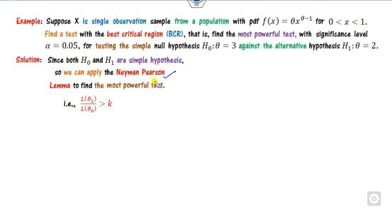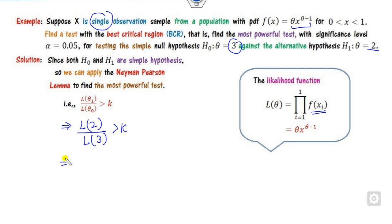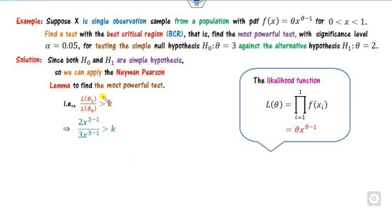To apply the Neyman-Pearson lemma, we first define the likelihood function. Since it is a single observation, I write the value of f(xi). What is L(θ1)? That is L1, where θ1 comes from H1, which is 2. What is L(θ0)? That is L0, where θ0 comes from H0. Now substitute the value of θ = 2. The likelihood ratio L1/L0 gives a result. Your target is to find the value of x from this ratio.